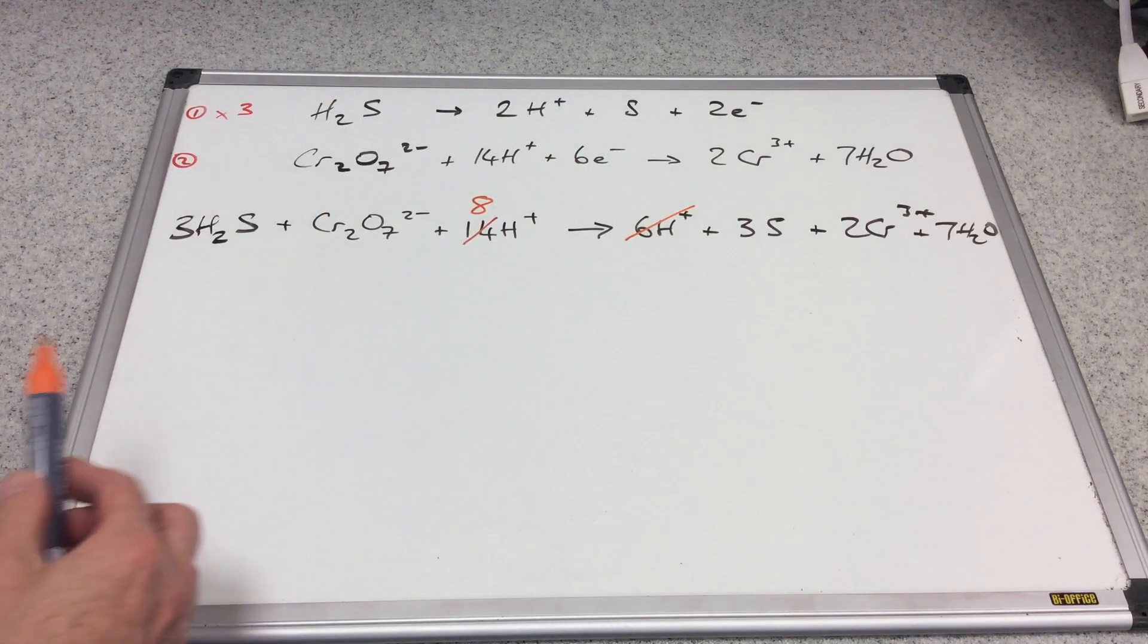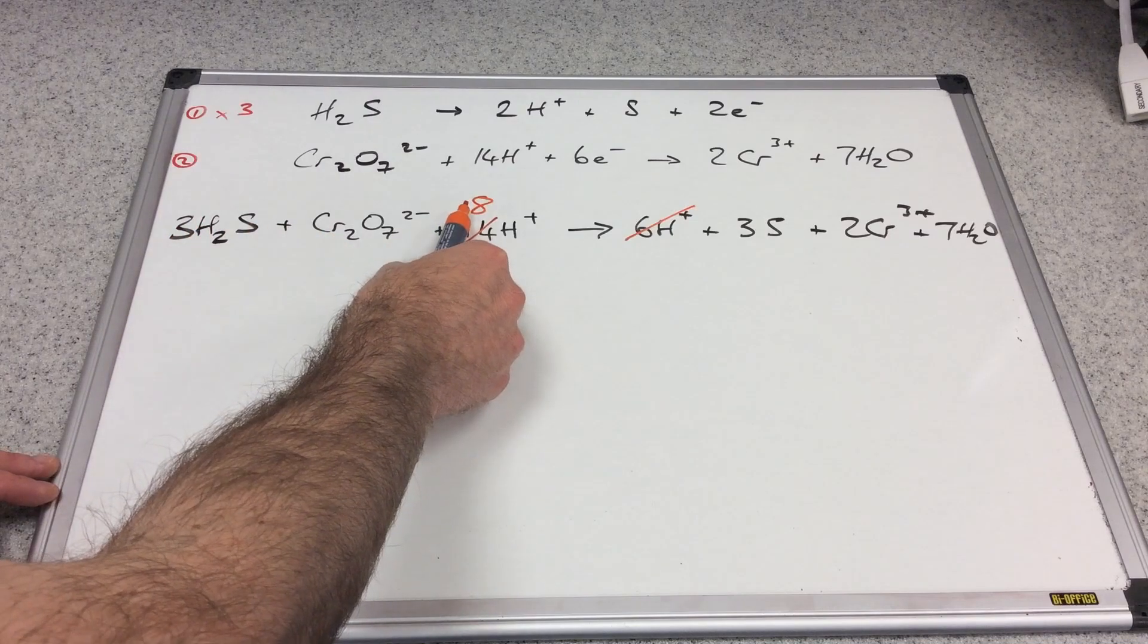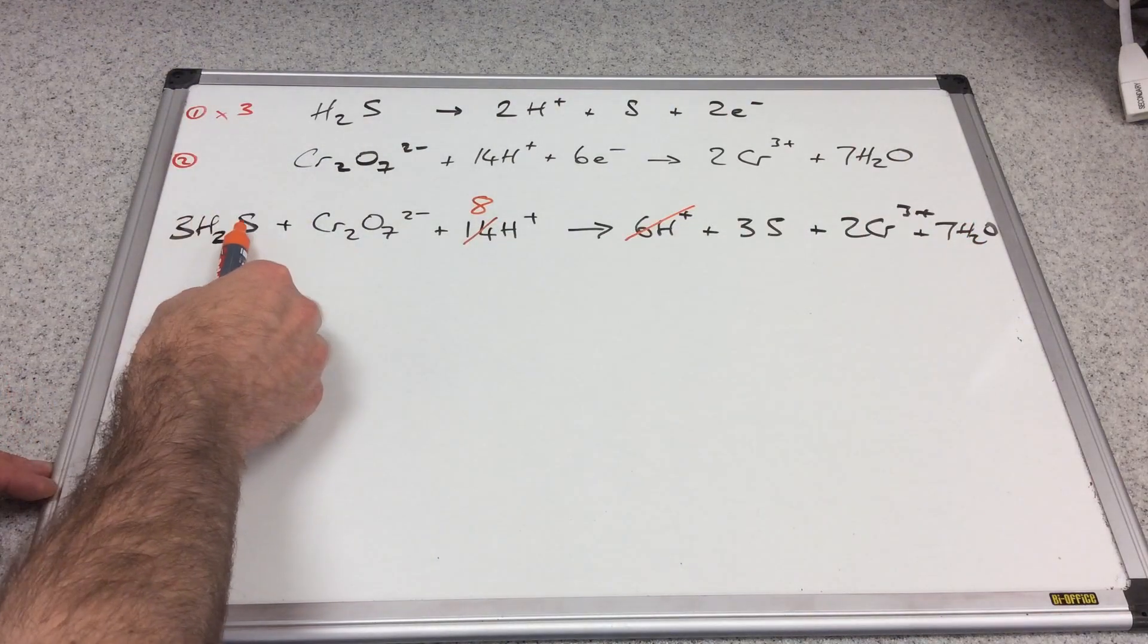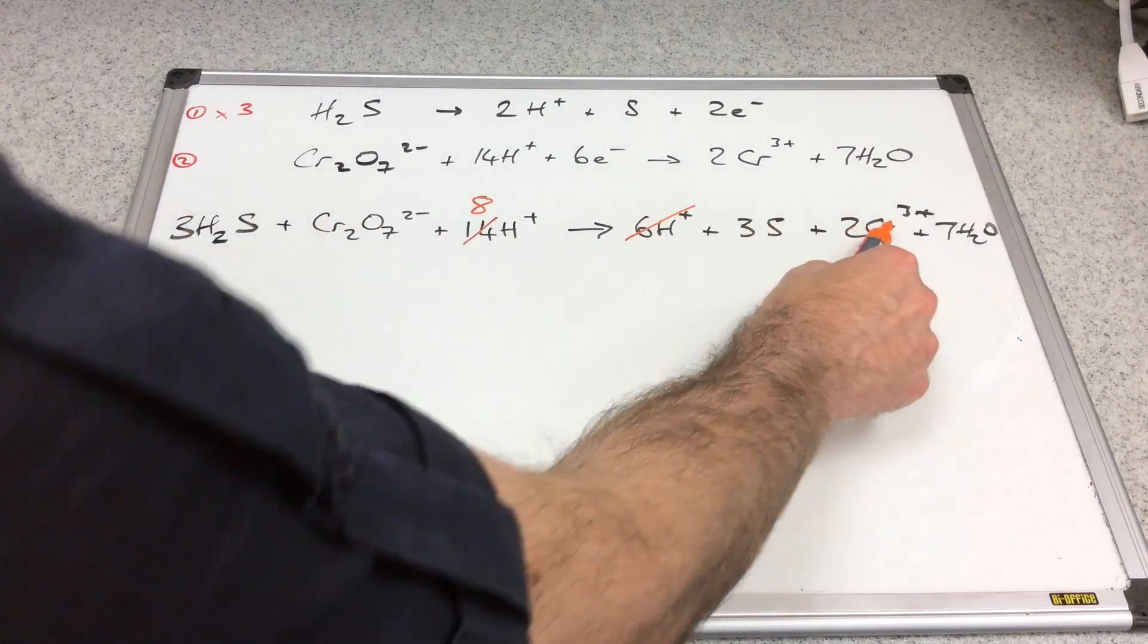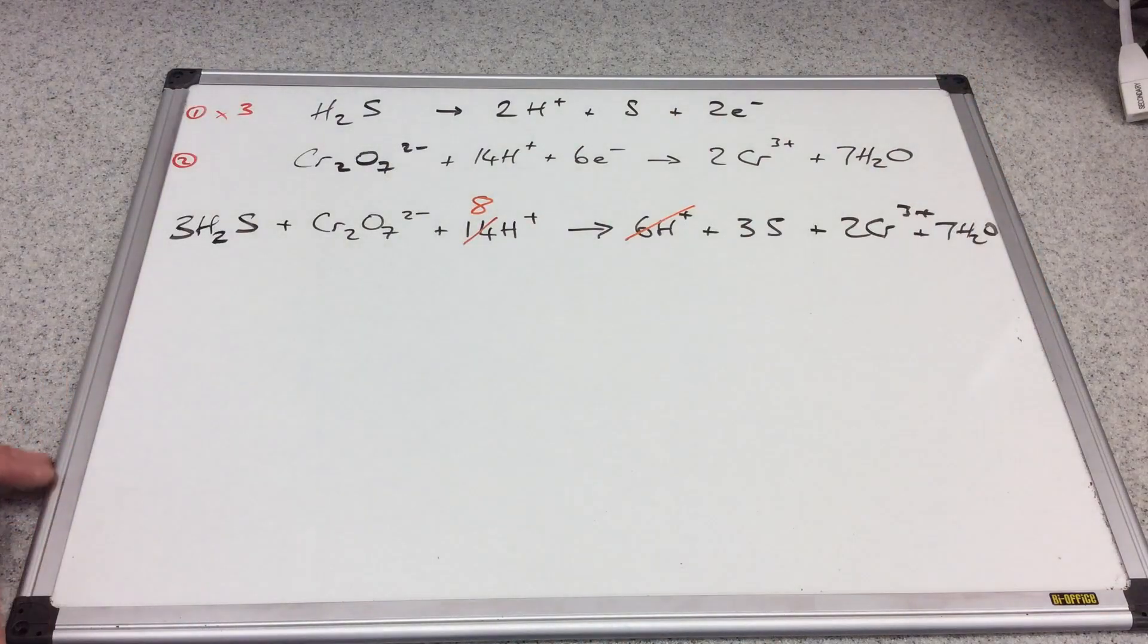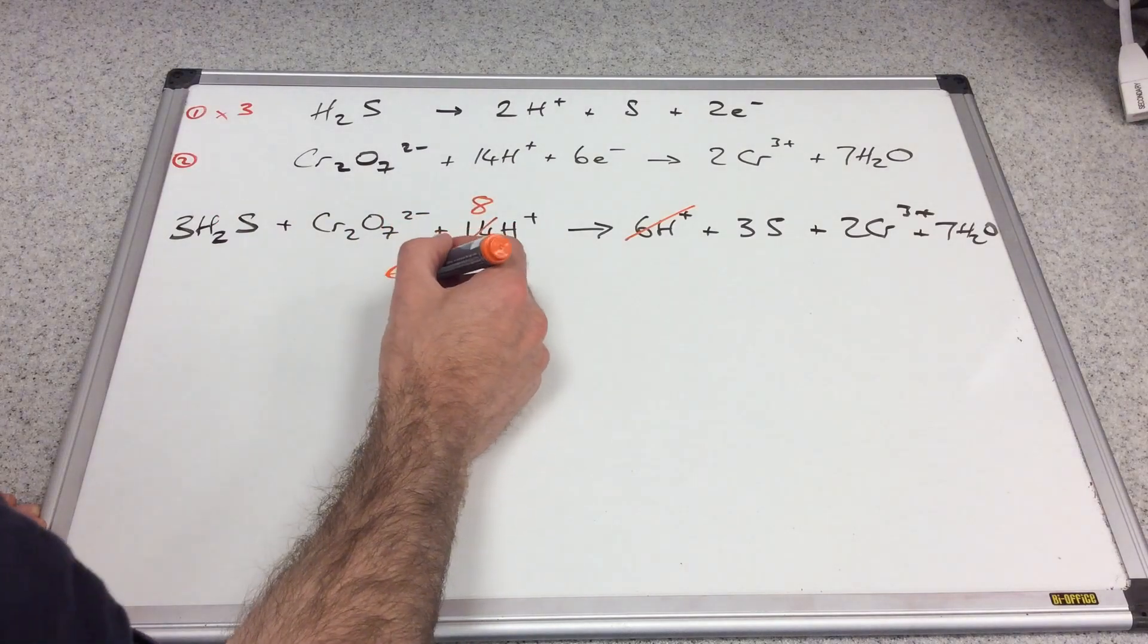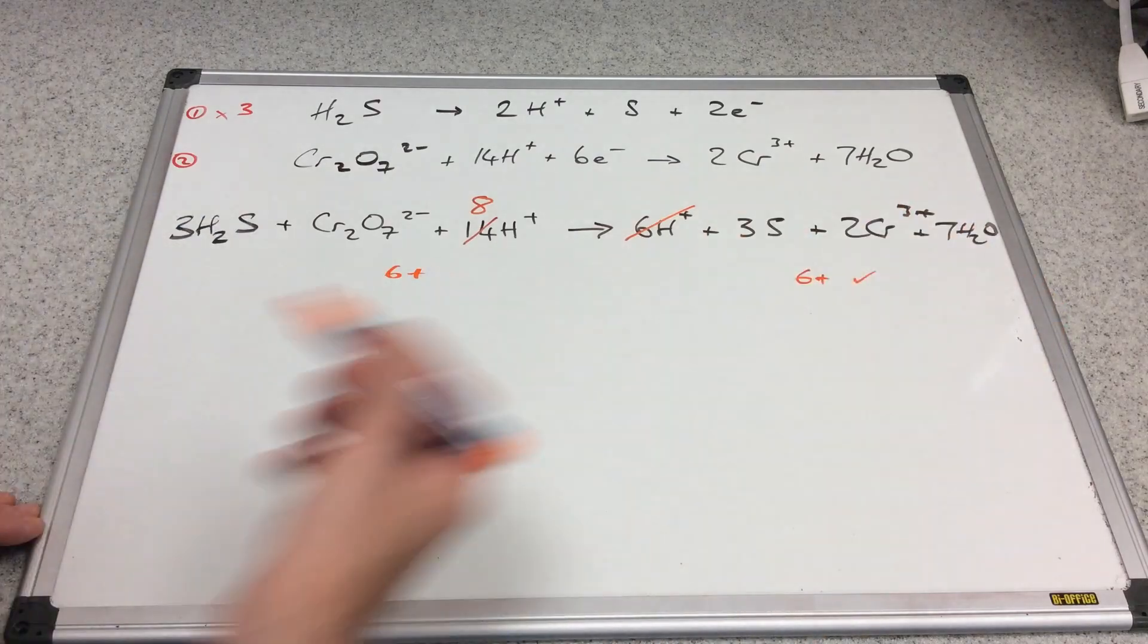We'll just check it balances. Three twos are six, plus eight is 14. Seven H2s is 14, so the hydrogens are sorted. Three sulfurs, three sulfurs, that's fine. Two chromiums, two chromiums. Seven oxygens, seven H2Os giving us seven oxygens there, so the atoms are fine. Let's check the charge. No charge, two minus with eight plus obviously leaves six plus, and two three pluses is six plus. Charges are fine as well.